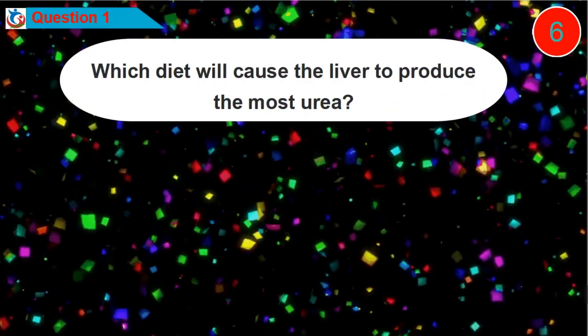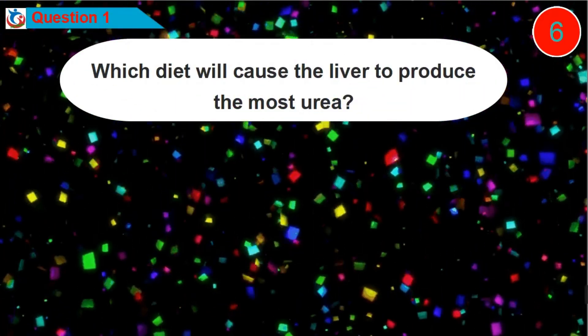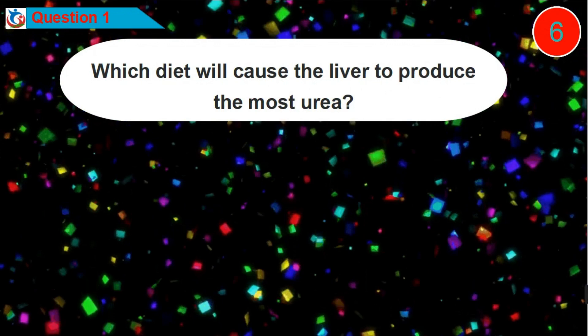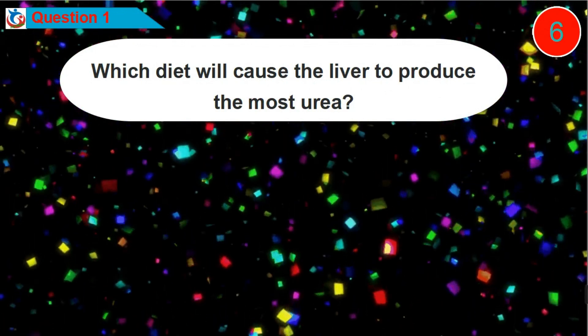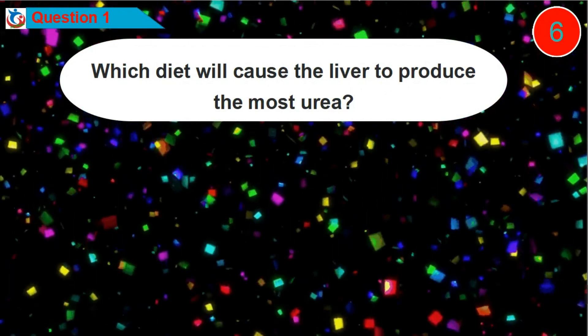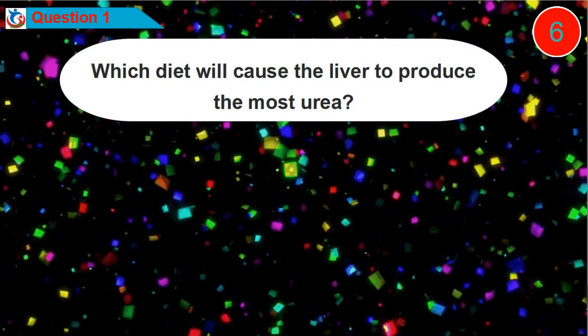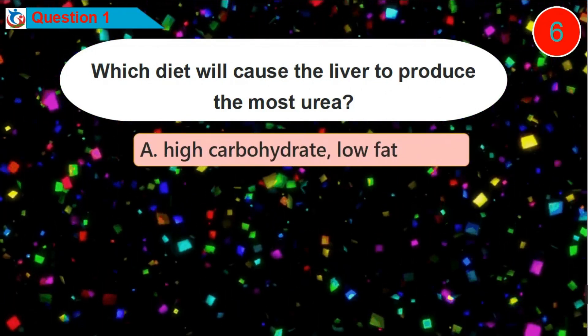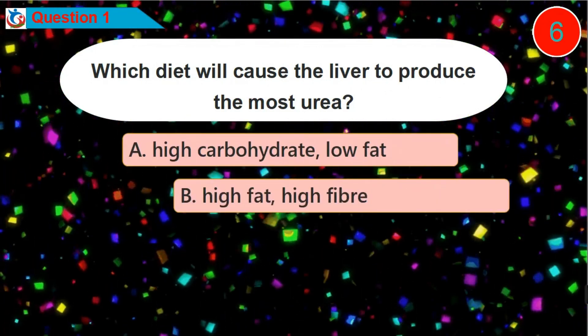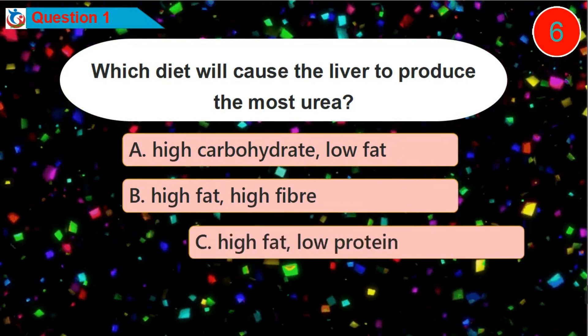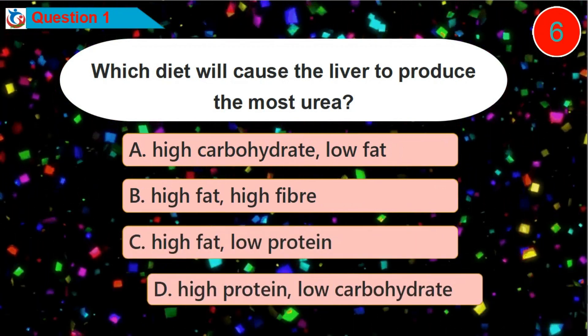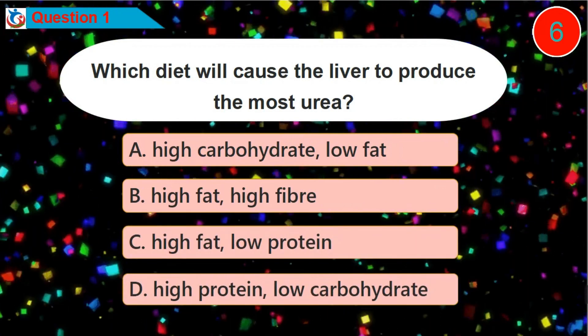Question 1. Which diet will cause the liver to produce the most urea? Is it option A, B, C, or D?